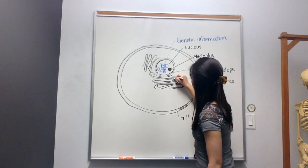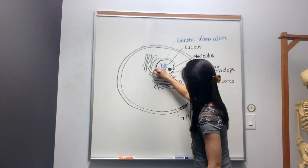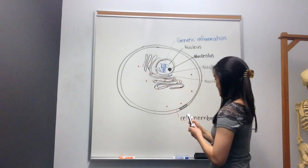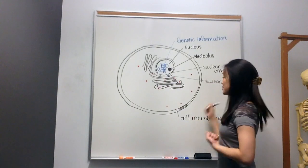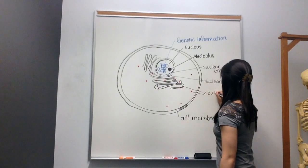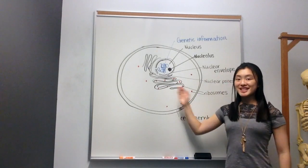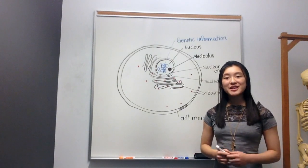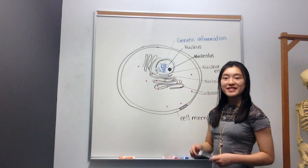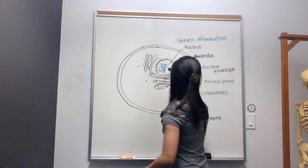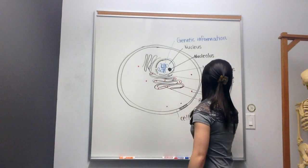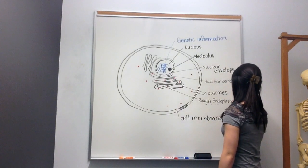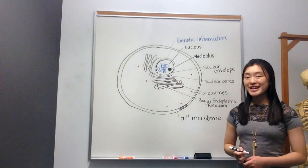On this endoplasmic reticulum, I'll draw some small red dots. These red dots can also be found in other areas of the cell. The small red dots are ribosomes. Because this endoplasmic reticulum has the ribosomes on it, it has a bit of a rougher texture. And for that reason, we call this endoplasmic reticulum the rough endoplasmic reticulum. So I'll label that here, rough endoplasmic reticulum. It is often known as the RER.